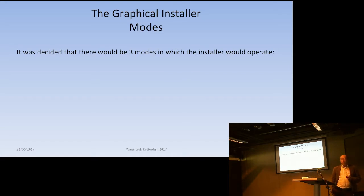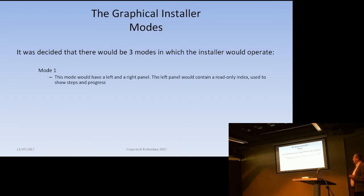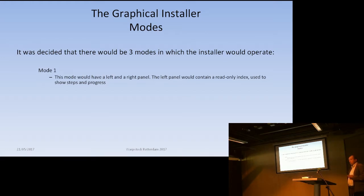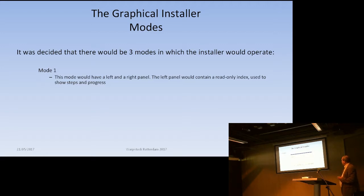Mode one — and this is what you all know — has a left panel and a right panel, the left panel being read-only and the right panel being anything we need to show you: steps and so on. Then we have mode two, which is similar to mode one, but the left panel becomes a navigable list. And mode three gets rid of the left panel entirely. This was the first design of the mode one panel — you see what is happening on the left-hand side and the right-hand side could be anything.